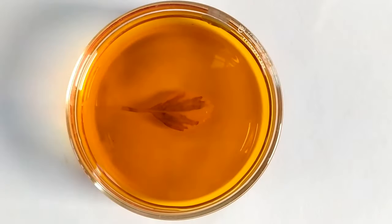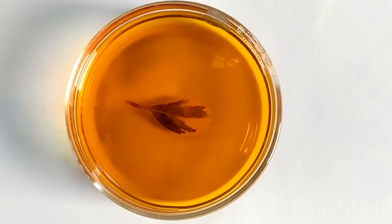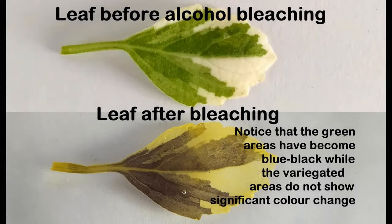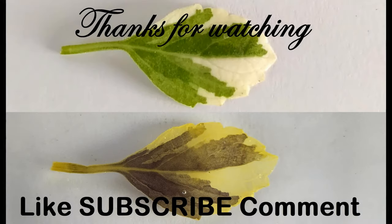After a couple of minutes, you will see that the parts of the leaf that originally contained the green spots test positive for iodine by becoming blue-black in color. However, the variegated spots on the leaf do not show any significant change in color, except for a faint brown iodine color — this is a negative test for starch and thereby photosynthesis. This simple experiment clearly demonstrates that chlorophyll is an absolute essential for photosynthesis to take place in a plant.